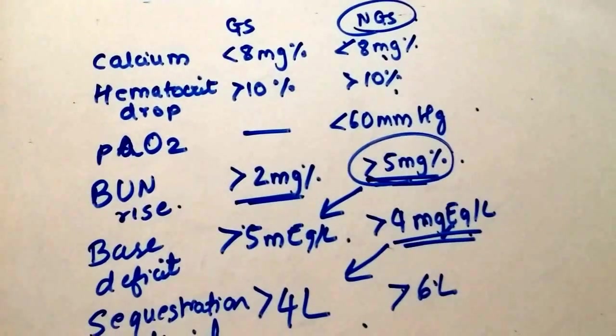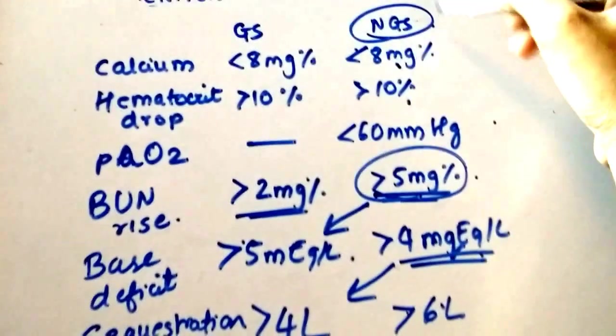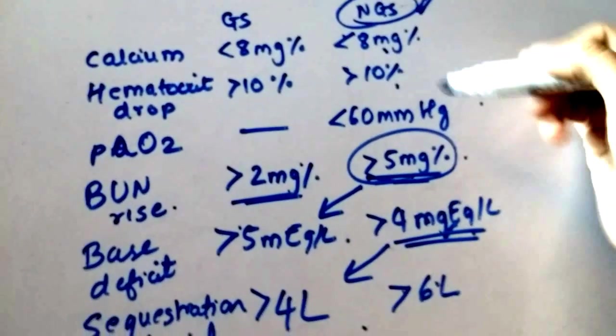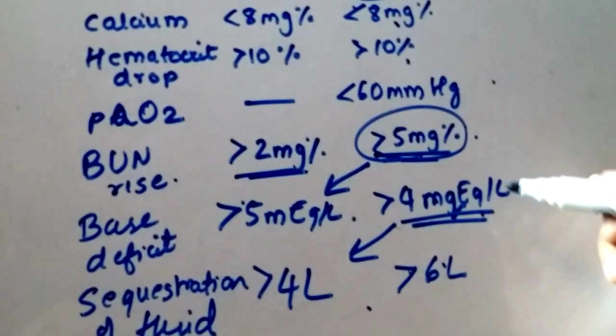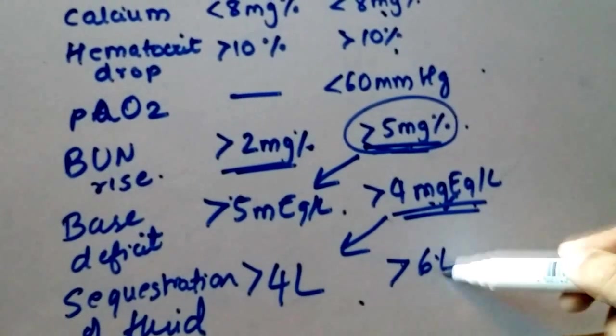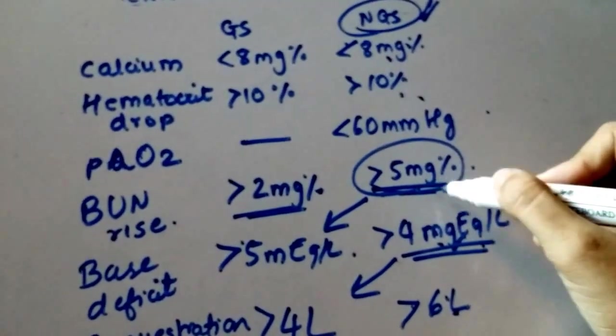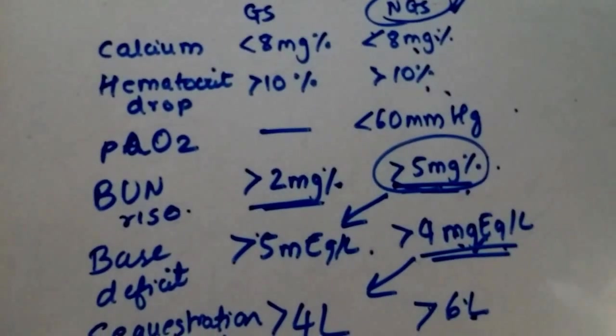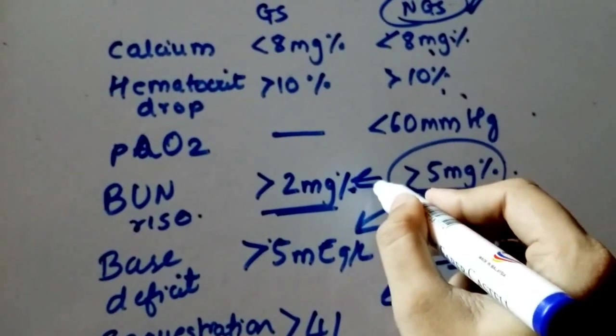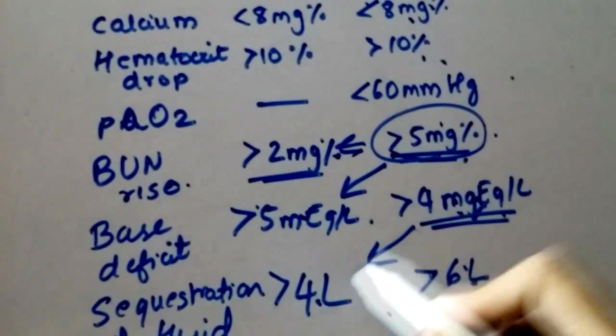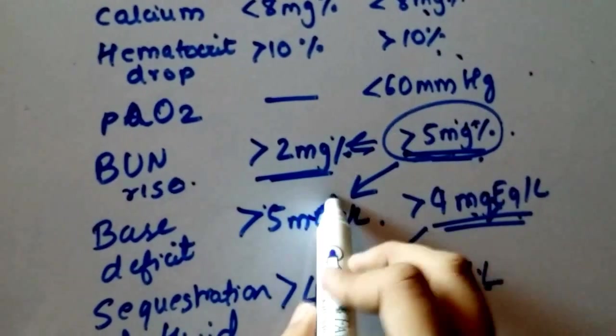When I first looked at all of these values, I noticed in the gallstone criteria, all the numbers are even numbers: 2, 4, 6, 8. And then in non-gallstones criteria, the BUN is actually 5.